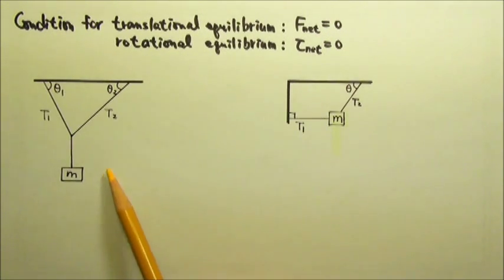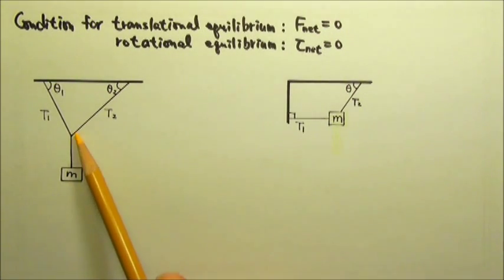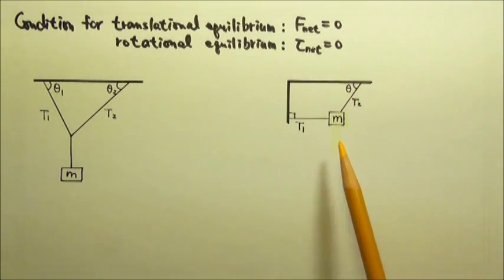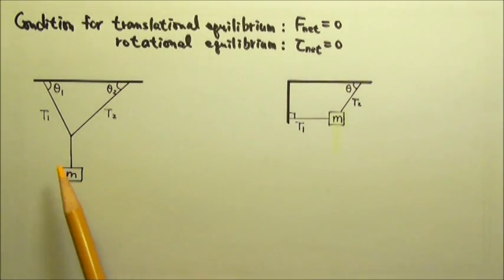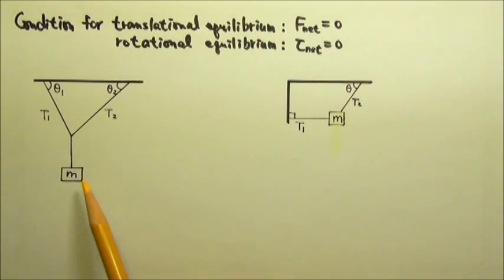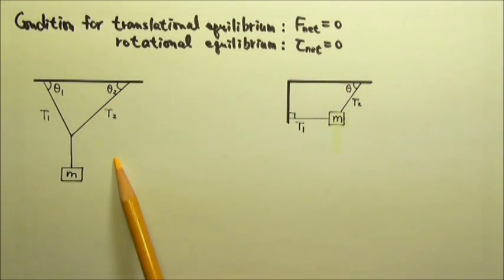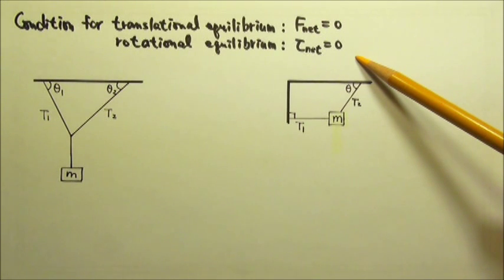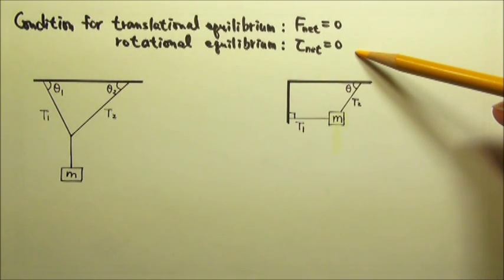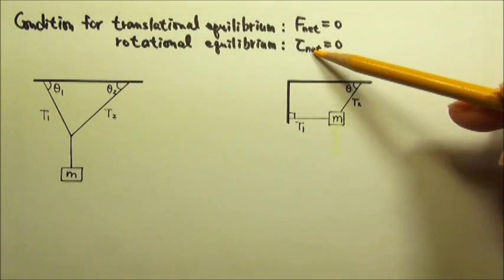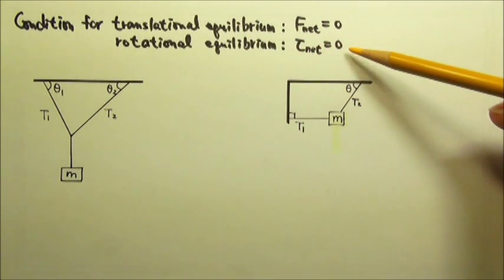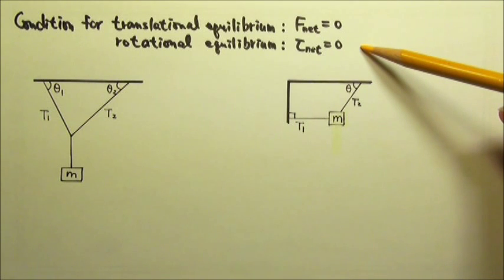We have done problems like these with objects hung from strings — they are in static equilibrium. So if we have to write equations to relate the tensions in the string, the mg, and the angles, we would write the conditions for equilibrium. To write these equations, we have to draw the force diagrams first, and because there's torque involved, we need to make sure that we draw the forces at the point of application.